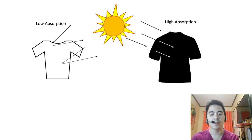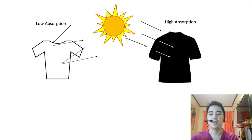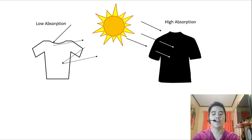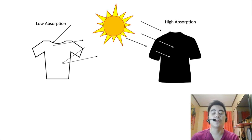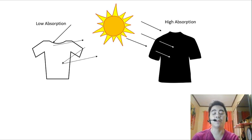So it's more comfortable to wear white clothes during summer because white reflects the colors instead of absorbing them. During warm days, it's wise to wear white because it absorbs less heat and is more comfortable to wear.